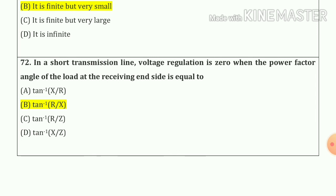Question number 72: in a short transmission line, voltage regulation is zero when the power factor angle of the load at the receiving end is equal to tan inverse of R divided by X — option number B.